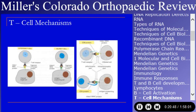T cells respond to different major histocompatibility antigens. In humans, this is the human lymphocyte antigen complex, or HLA. The cytotoxic or killer T cell responds to the class 1 major histocompatibility antigen, and the helper T cell responds to the class 2 major histocompatibility complex antigen. These are different cells which can be measured and quantified.